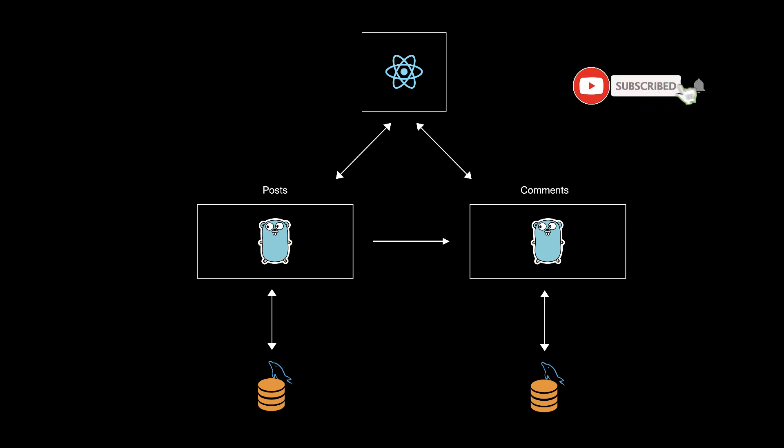In this video, we will continue the series of Golang microservices. In the previous tutorial, we were sending a request from post to comments. In this tutorial, we will do the opposite. But I will also add a feature that the comments microservice will have a 10% chance of failure when requesting the post microservice. This will cause missing information in the post microservice compared to the comments microservice, and we will fix this problem in the next tutorial by adding cron jobs to synchronize the database.